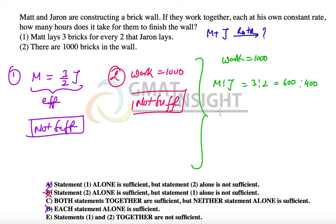Therefore, even after combining the two statements, we cannot find out in how much time Matt and Jaren do the work. The answer to the question becomes option E. Thank you so much.